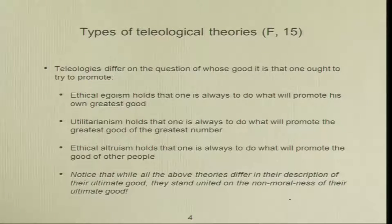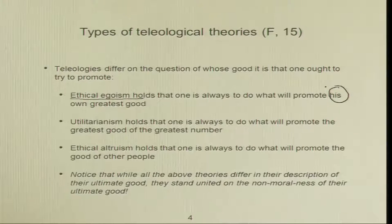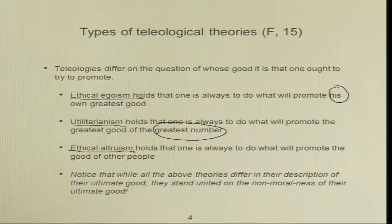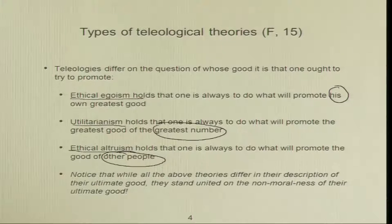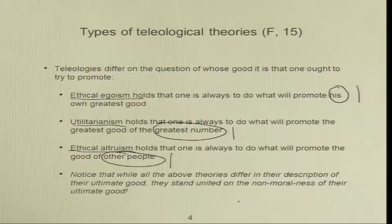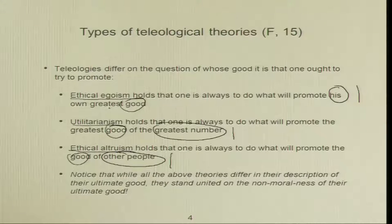Ethical egoism holds that one is always to do what will promote his own greatest good. Utilitarianism holds that one is always to do what will promote the greatest good of the greatest number. Ethical altruism holds that one is always to do what will promote the good of other people. Notice that while all these theories differ in their description of their ultimate good, they stand united on the non-moralness of their ultimate good. The difference between the three theories is in the spread of the agency, but what is common is that the good — in each case — is a non-moral good.